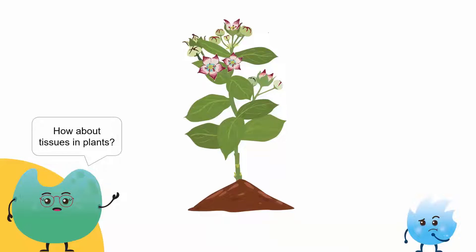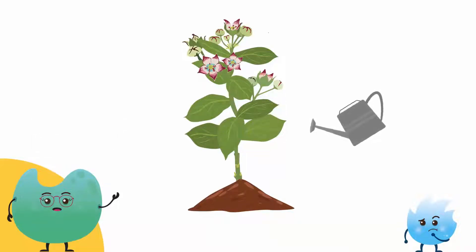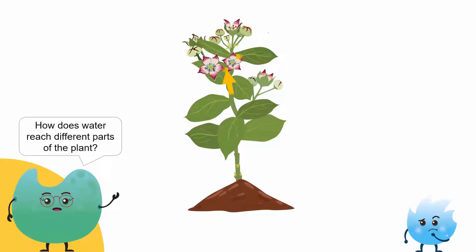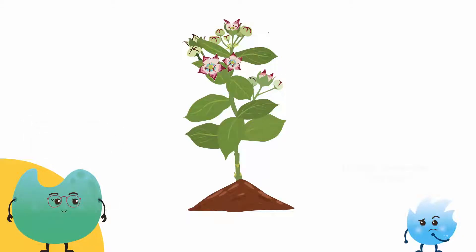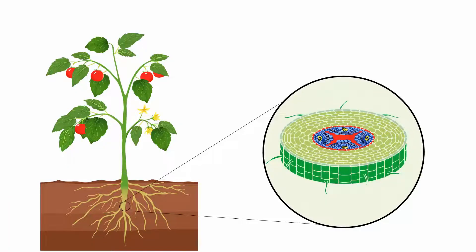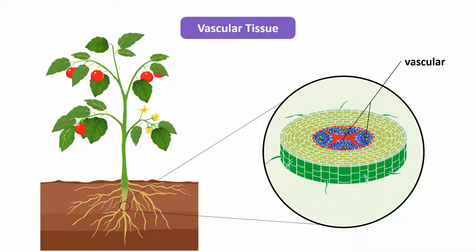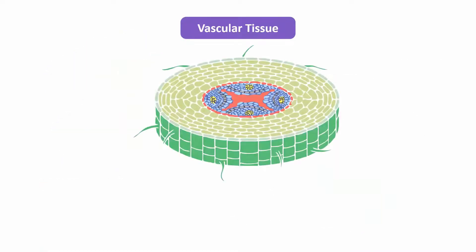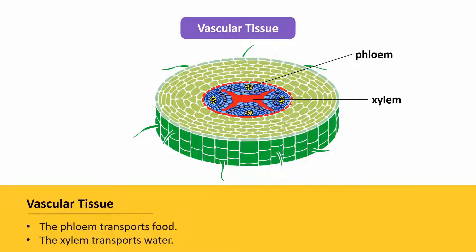Now, what about tissues in plants? We need to water our plants so that they don't die. But have you ever wondered how the water reaches different parts, like the leaves or flowers of the plant? Maybe through some pipes that are in plants. You're close enough! Water travels from the roots to the stem, leaves, or fruit of the plant through vascular tissue. Vascular tissue has two components, the xylem and phloem. The phloem transports food from the leaves to the different parts of the plant, whereas the xylem transports water from the roots.